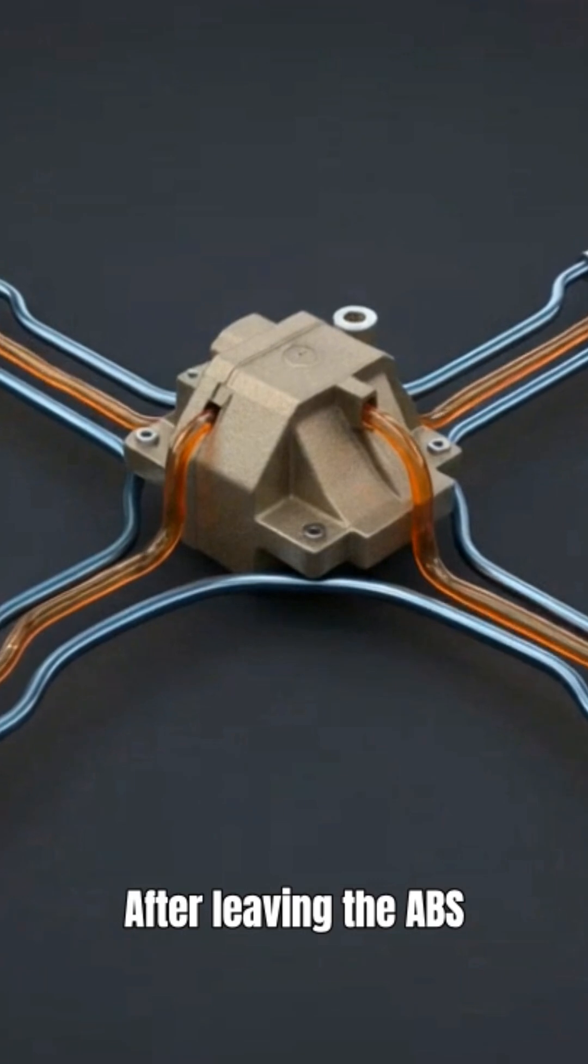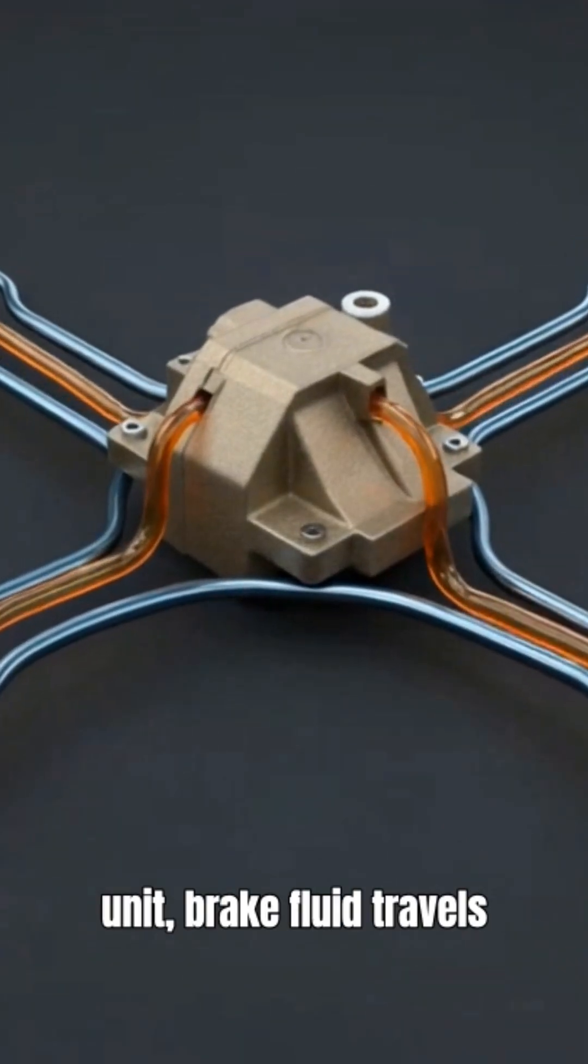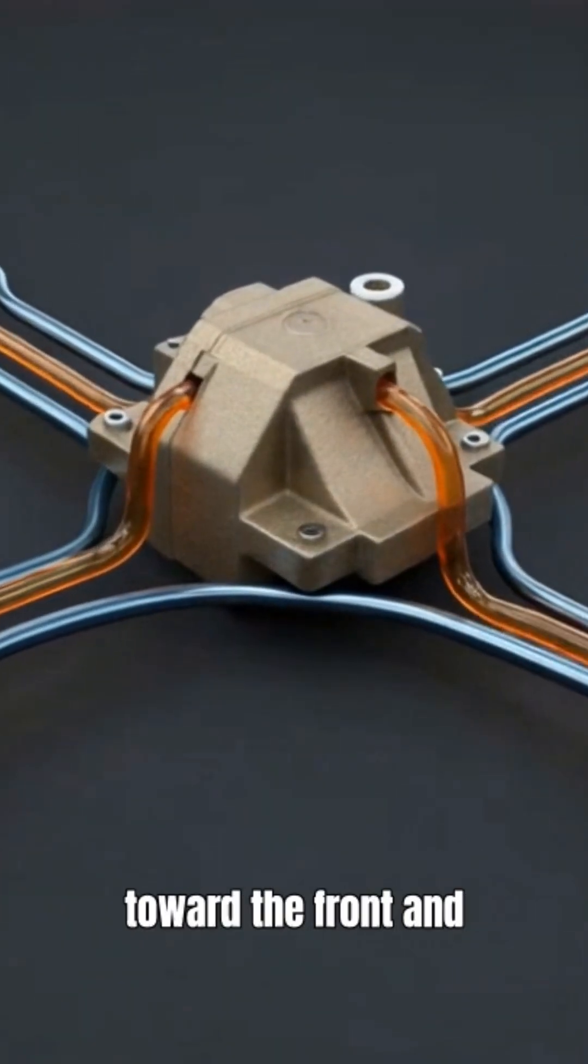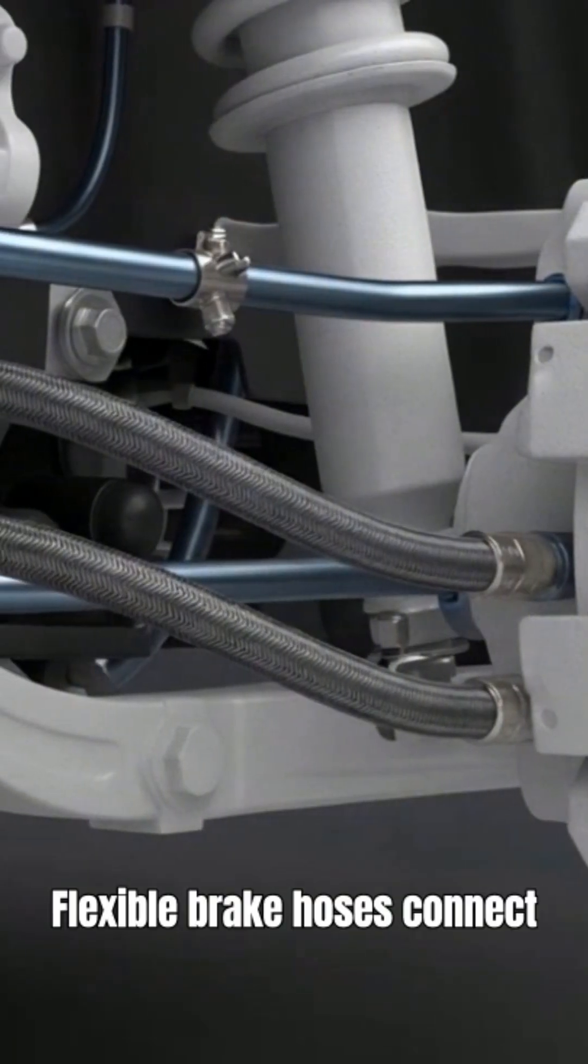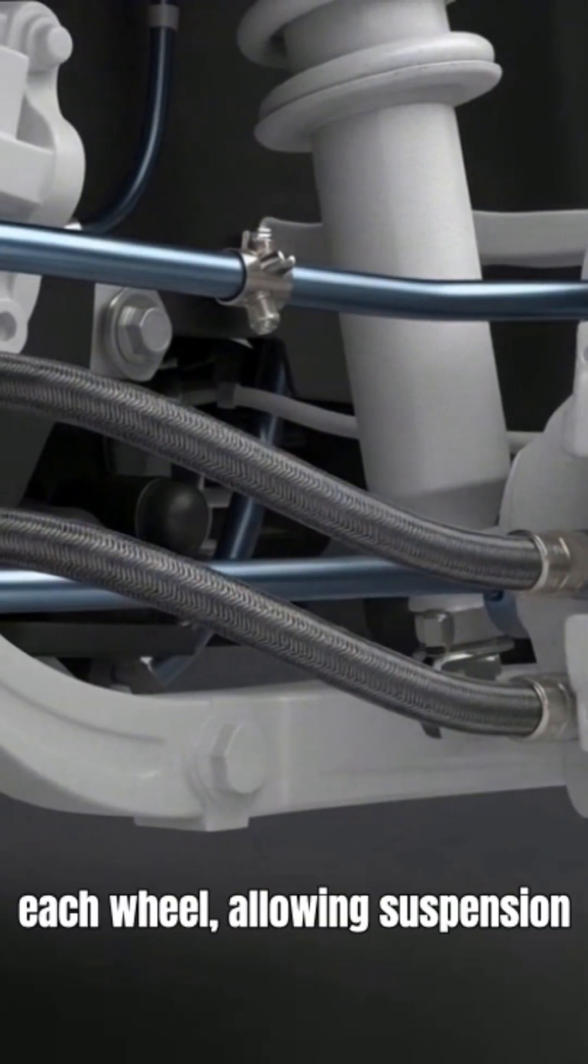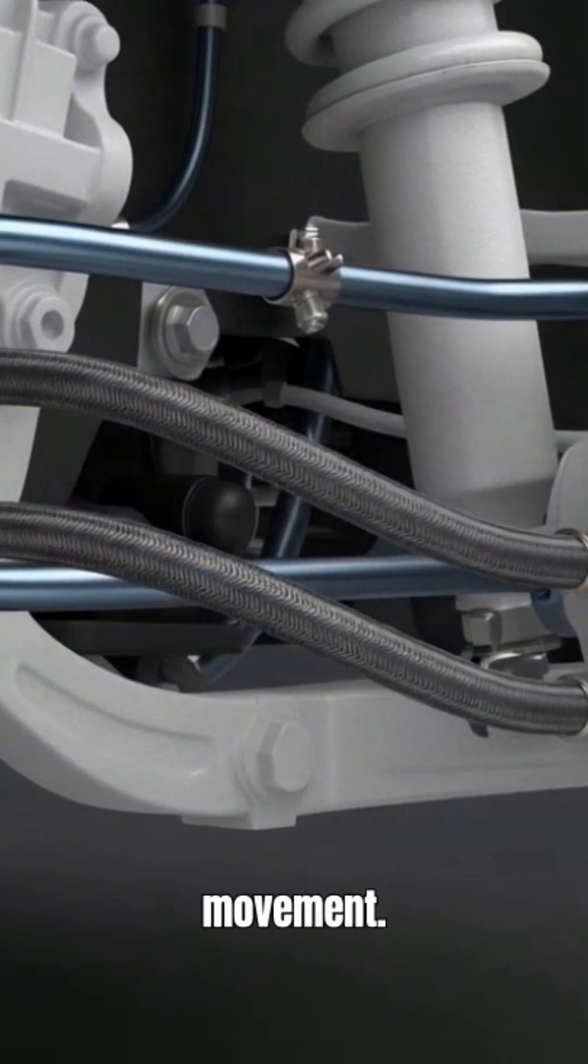After leaving the ABS unit, brake fluid travels through high-pressure brake lines toward the front and rear wheels. Brake lines carry pressurized fluid the length of the vehicle. Flexible brake hoses connect the solid lines to each wheel, allowing suspension movement.